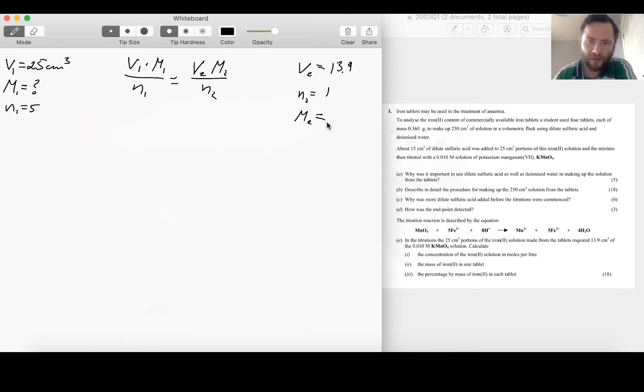And then finally molarity of the second solution is given to us as well, it's 0.01. Solving it for M1, I'm going to get an expression that M1 equals V2 M2 times N1 all that divided by V1.